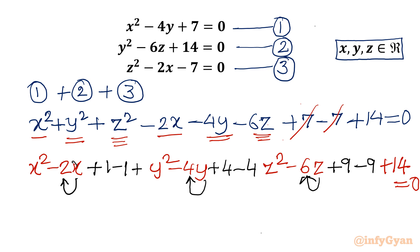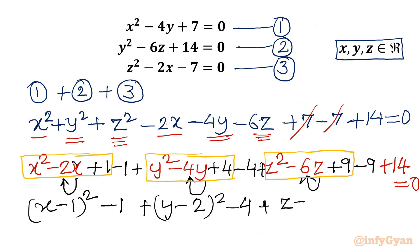Now if you will notice only the first three terms for each variable, it will be one perfect square. For x bracket: (x - 1)² and then minus 1. Then y bracket: (y - 2)² and then minus 4. Then for third bracket z: (z - 3)² and then we have got minus 9, and then plus 14. Right hand side is 0.